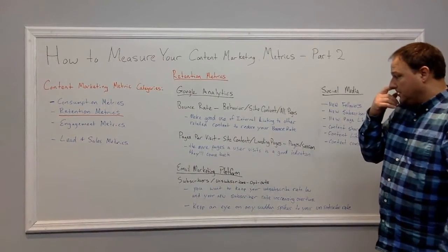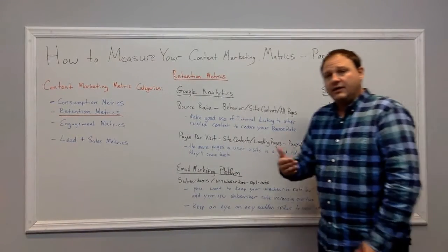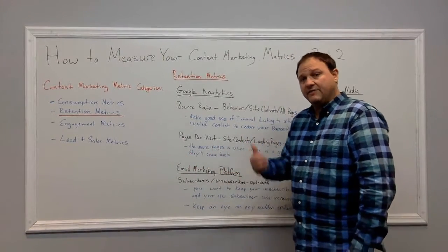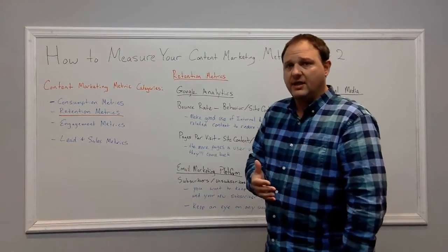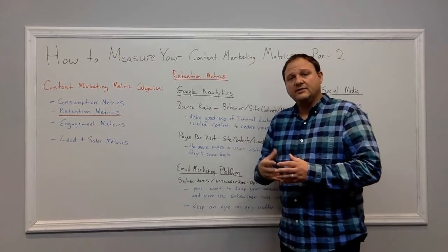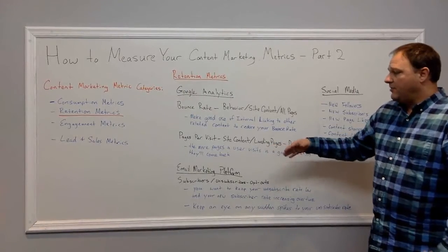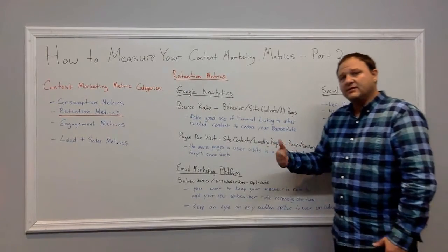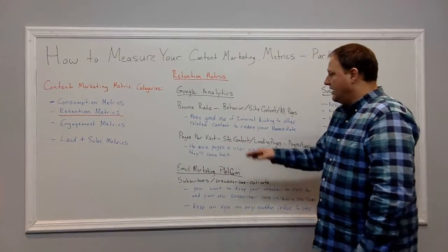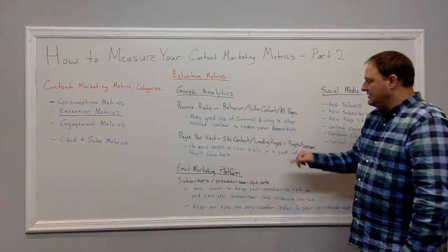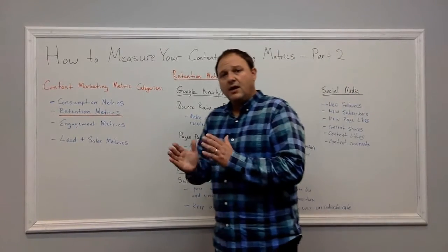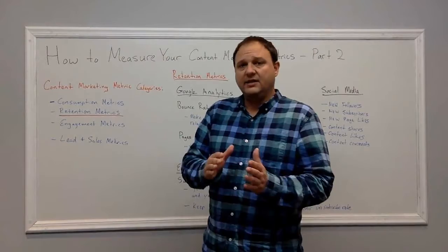Pages per visit is the next metric. This is pretty much the metric of how many pages a person visits. If your bounce rate is high, they're probably only visiting one page on average. You want to try to keep this number higher — it's a good indication that if people are visiting more than one page on your site, that user will likely come back again in the future. To access this, go to Site Content, Landing Pages, then Pages per Session, and this will tell you how many pages a visitor is viewing per session.